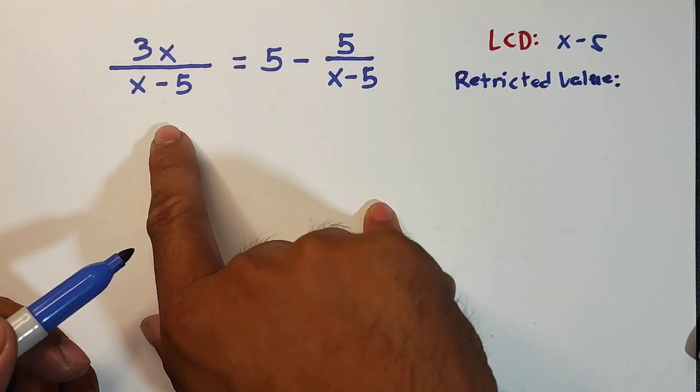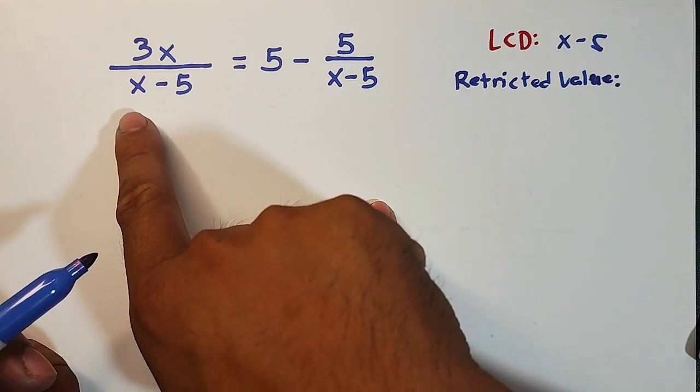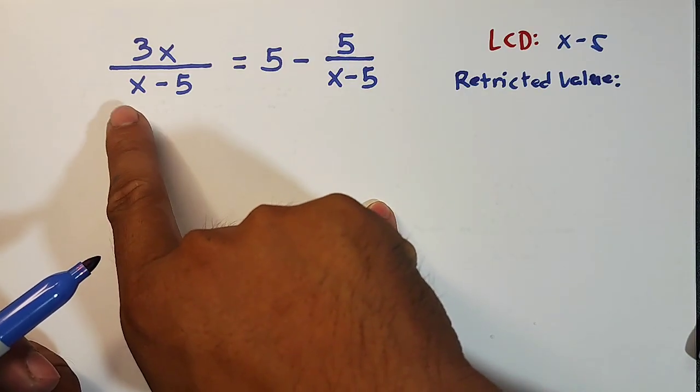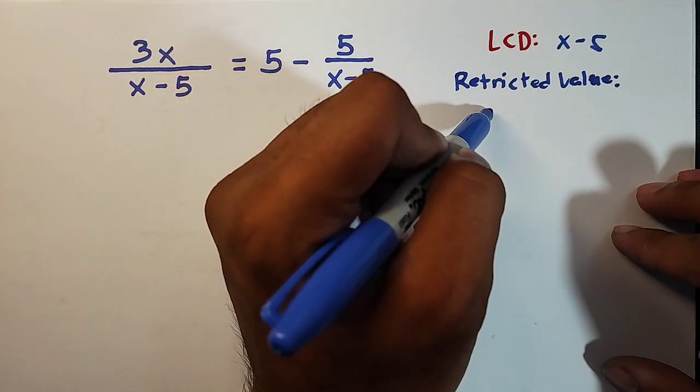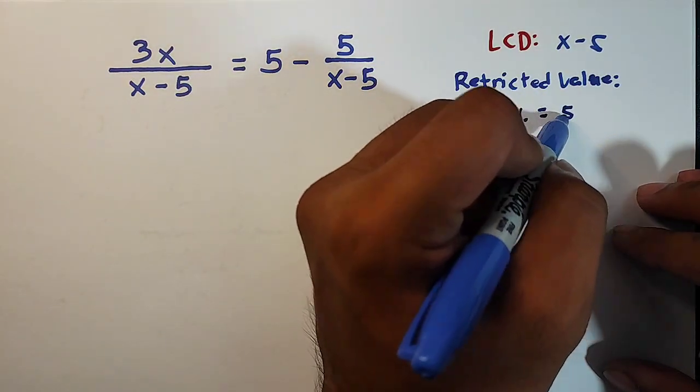So how do we calculate for the restricted value? You just need to know which value will cause your x to become 0. And here, the restricted value, or RV, is simply 5.